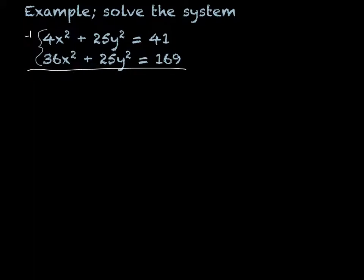That's going to give me negative 4x² - 25y² equals negative 41. And the 36x² + 25y² equals 169.